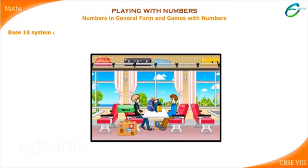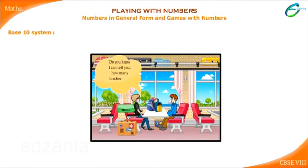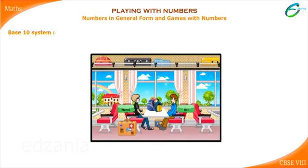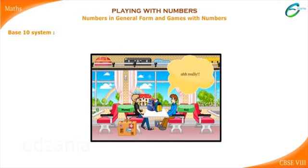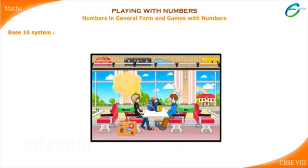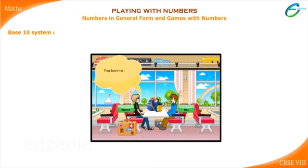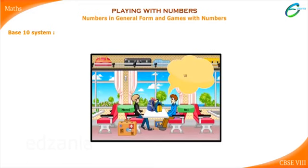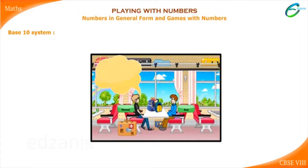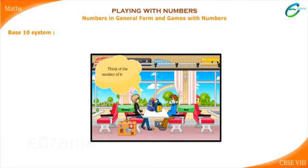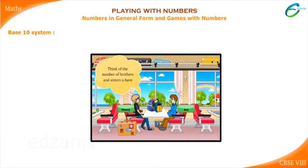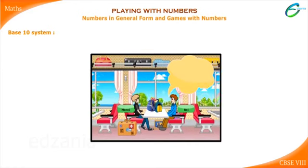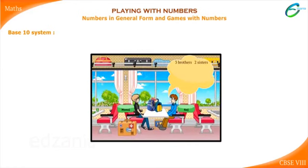Manoj: Do you know I can tell you how many brothers and sisters you have? Raj (surprised): Oh really? Manoj: You also follow the instructions I give. Hmm, okay. Manoj: Think of the number of brothers and sisters you have. Raj thought: he has three brothers and two sisters.